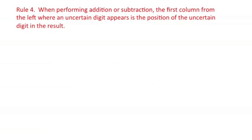When we perform arithmetic with measured values, the result has some uncertainty associated with it. Let's take a look at some rules that help us decide where the first uncertain digit resides. When performing addition or subtraction, the first column from the left, where an uncertain digit appears, tells us the position of the uncertain digit in the result. For example, let's add these three pieces of data. We see that the middle entry has an uncertain digit in the first decimal place.